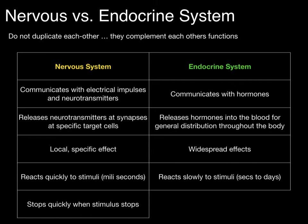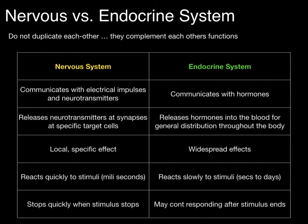The nervous system can stop quickly when the stimulus stops — you innervate a muscle, it contracts, you stop the stimulus, and the muscle relaxes. Whereas the endocrine system may continue responding after the stimulus ends. When you have parathyroid hormone circulating in the bloodstream affecting the breakdown of bone tissue, if you stop the secretion of parathyroid hormone, it takes a little bit of time for that effect to stop happening.